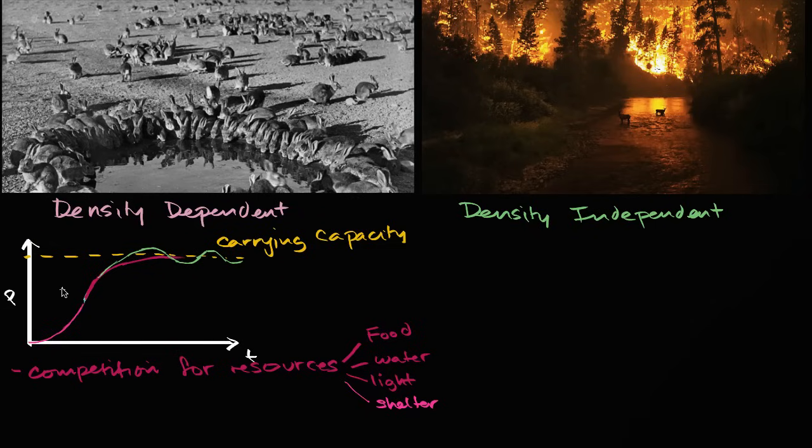But what are other density-dependent factors that we could think about? Well, another thing is if you are a predator when, say, the rabbits become this dense, it's much easier to start to pick them off and it's much easier to get your lunch. And so predatory factors, or we could say predation. Predation. Once a population gets large enough and dense enough, it might be the predators who can say, hey, we can start, it's way easier for us to get our lunch.